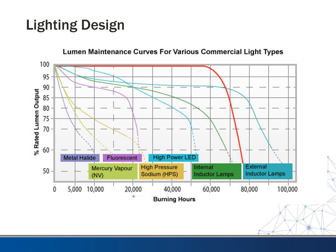Even before the lamp burns out, these things depreciate pretty significantly — some worse than others. Metal halides are like a brand new car — as soon as you drive it off the lot, it depreciates like crazy. After 5,000 hours, you're only getting 70% of the original light. Mercury vapor and high pressure sodium are similar. Fluorescents hold their own pretty well — staying at 90% to about 15,000 hours, then dropping off before they die. LEDs do pretty well too, staying in the 90s to about 20,000 hours and above 80% for 40,000 hours. You need to account for this in your lighting design — you might want it brighter from day one to account for the dimming over time.